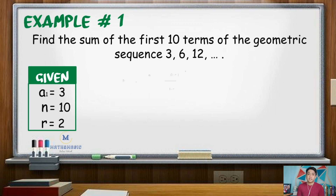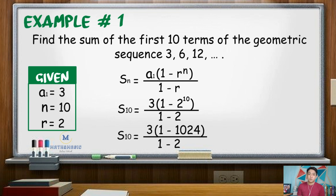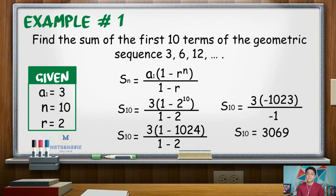Substituting the values in the formula, s sub n equals a sub 1 times quantity 1 minus r raised to n, all over 1 minus r. That gives s sub 10 equal to 3 times quantity 1 minus 2 raised to 10, all over 1 minus 2. Since 2 raised to 10 is 1024, then 1 minus 1024 is negative 1023, dividing by negative 1 gives positive 1023, and multiplying by 3 gives 3069. Therefore, the sum of the first 10 terms of the geometric sequence is 3069.